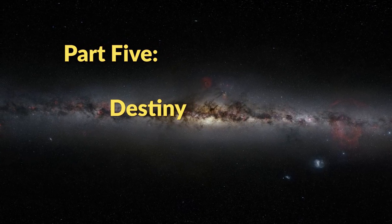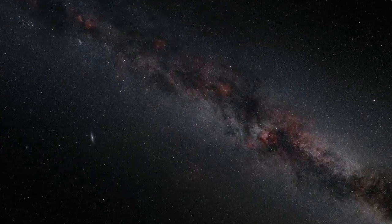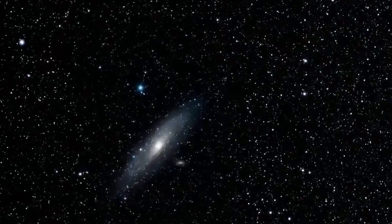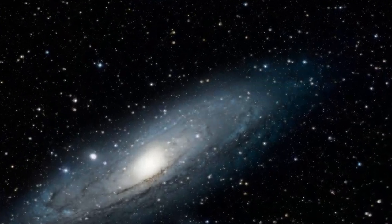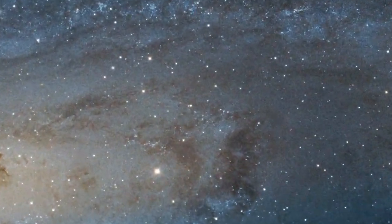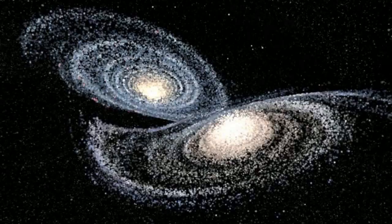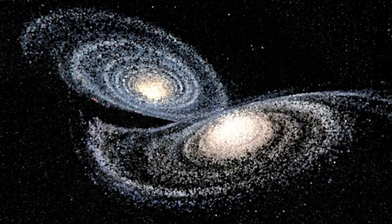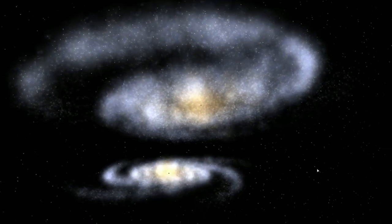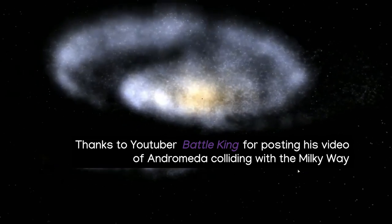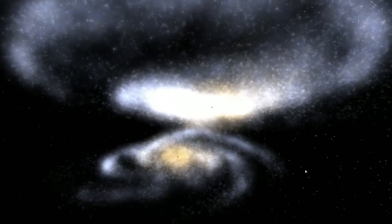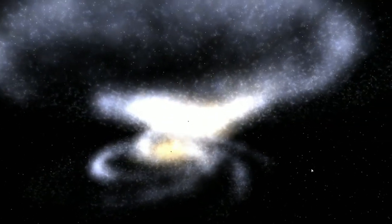Andromeda is also a spiral barred galaxy with a second black hole at its center. Whereas in the Milky Way, the second black hole now orbits at a distance of about 1.5 light years, in Andromeda the distance is about 5 light years. Andromeda is due to collide with the Milky Way in about 5 billion years. This will then be the basis for a repeat of what happened 10 billion years ago, provided that Andromeda's acceleration is in the opposite direction to the Milky Way.